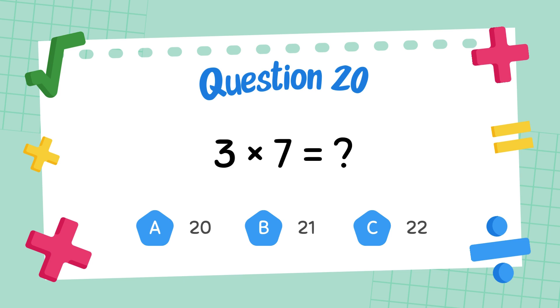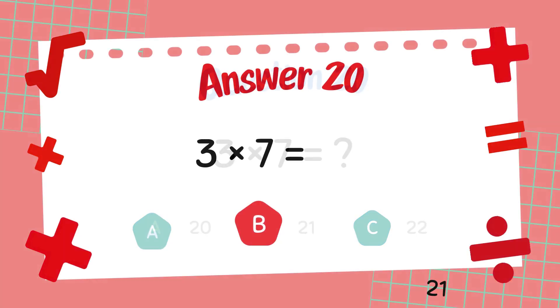What is three times seven? The answer is twenty-one.